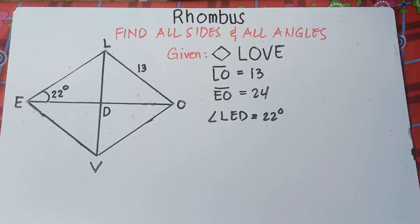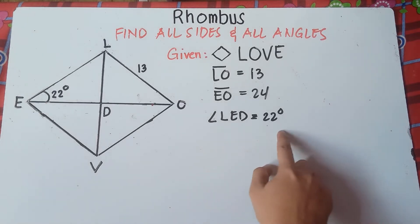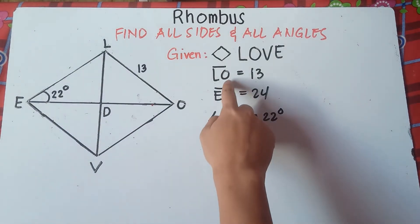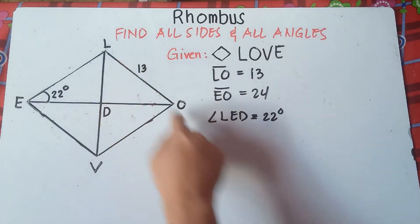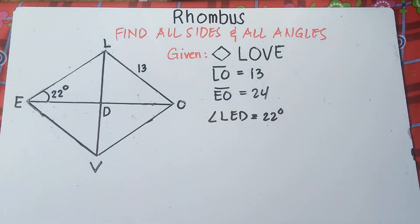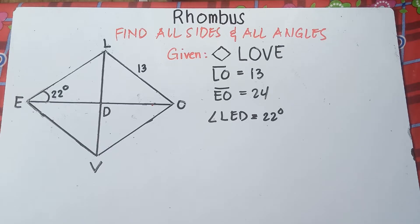So let's try to find the angles first. We have given angle LED, which is 22 degrees. We have given length LO which is equals to 13, and diagonal EO is equals to 24. So let's find the angles first. One of the properties of a rhombus says that diagonals bisect the opposite angles.